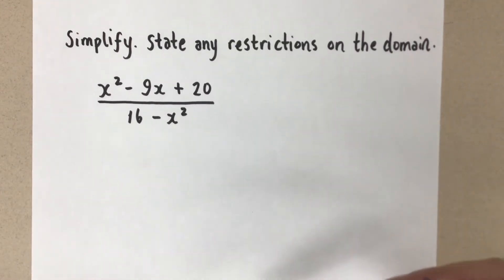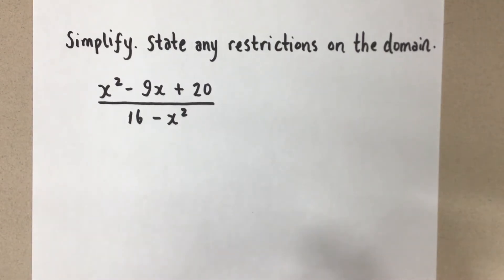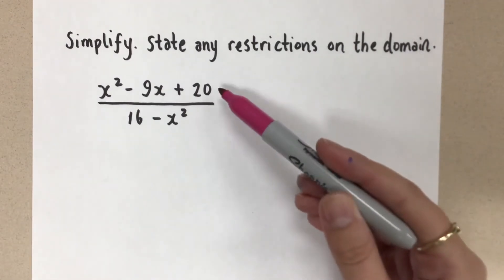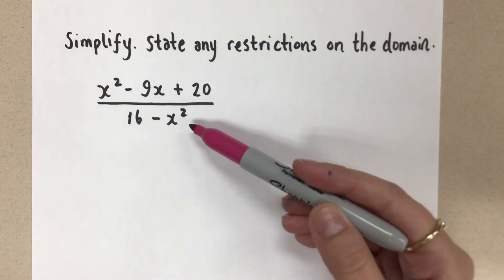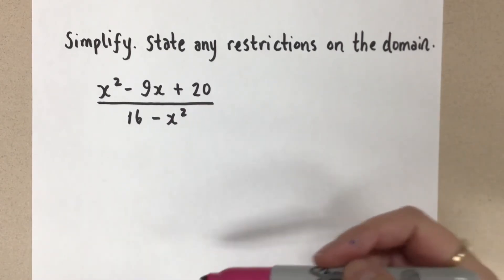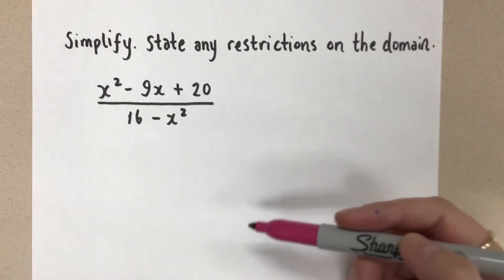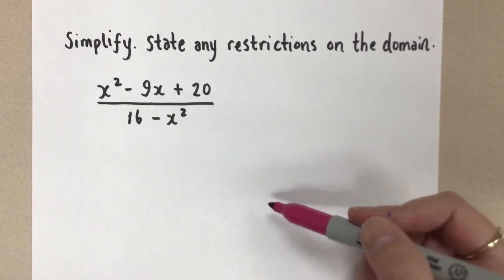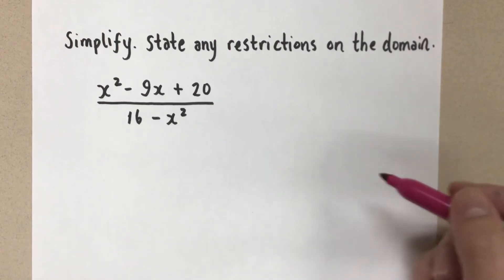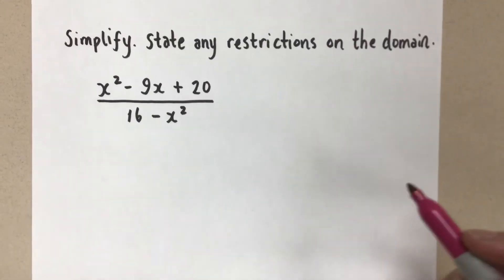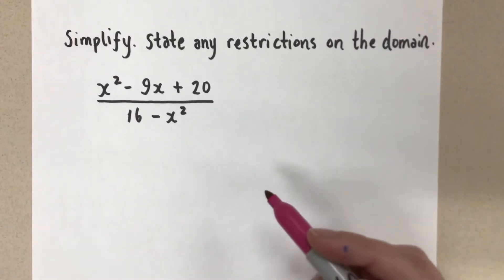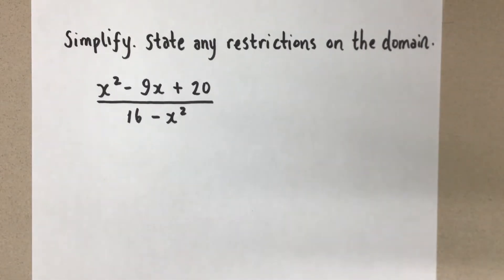So to see if there are common factors, we have to factor both the numerator and the denominator. Your first step when simplifying rational expressions is to factor both the numerator and the denominator. In the numerator I have a simple trinomial, so I'm going to work with products and sums, and in the denominator I have a difference of squares. I'm going through this quickly, assuming we know how to factor quadratic expressions. If you need review, please go to my other videos on factoring — I have a lot covering all the different types.